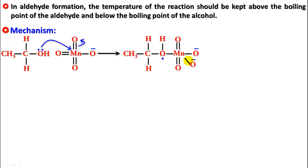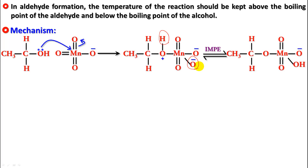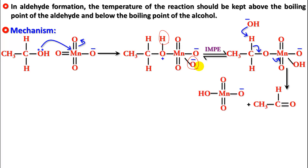The intermediate undergoes intramolecular proton exchange (IMPE), where the H moves from this oxygen to one of the other oxygens. Then OH⁻ comes in and picks up this H; the bond between H and carbon shifts to between carbon and O, and the bond between O and manganese breaks, giving you the aldehyde and HMnO4⁻.